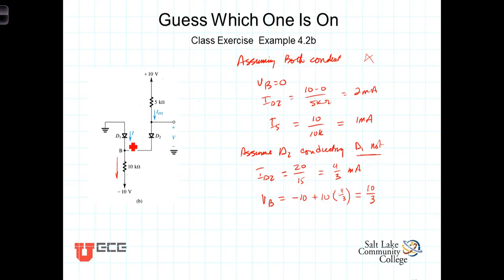So, as long as D1 is not conducting, everything works out right, and that turns out to be the correct state of the circuit.